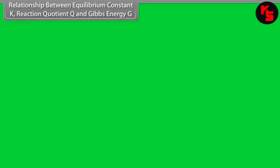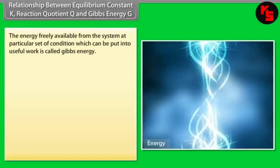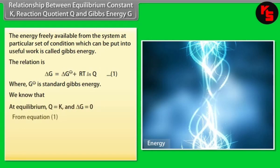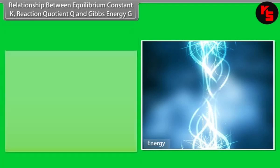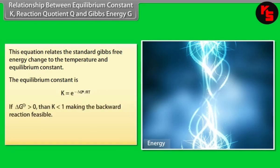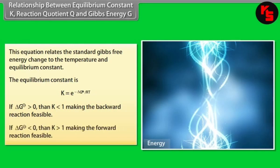Relationship between equilibrium constant K, reaction quotient Q, and Gibbs energy G. The energy freely available from a system at a particular set of conditions that can be put into useful work is called Gibbs energy. At equilibrium, Q = K and ΔG = 0. The standard Gibbs free energy ΔG° = −RT ln K. If ΔG° > 0, then K < 1, making the backward reaction feasible. If ΔG° < 0, then K > 1, making the forward reaction feasible.